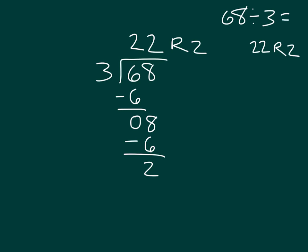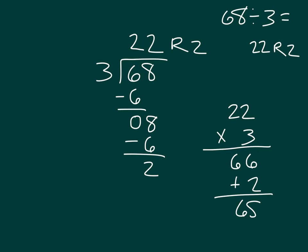We have different ways to show our work — using place value disks and long division. One last thing: we can check this work because the inverse operation of division is multiplication. So we take twenty-two and multiply by the divisor three. Three times two is six, three times two is six — that gives us sixty-six. Then we add the remainder back in: sixty-six plus two is sixty-eight. And sixty-eight matches what we were originally dividing.